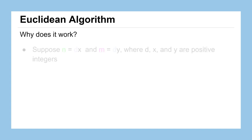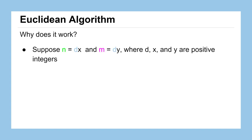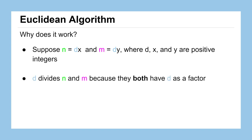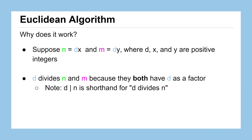Let's talk about why the Euclidean algorithm works. Suppose we have some number n defined as the product of d and x, and a second number m defined as the product of d and y, where d, x, and y are all positive integers. Then d divides both n and m because they both have d as a factor. We'll use the notation of a vertical line between two numbers — d | n — as shorthand for 'd divides n'.